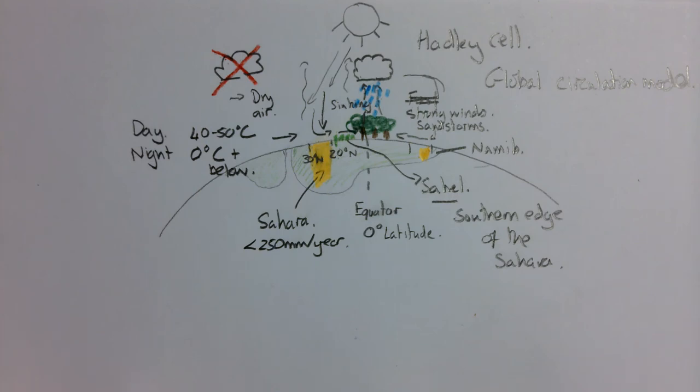Some last questions then. Why is it dry where hot deserts are found? Good. Because the air is dry and sinking and no clouds form, so there can be no precipitation. Well done.